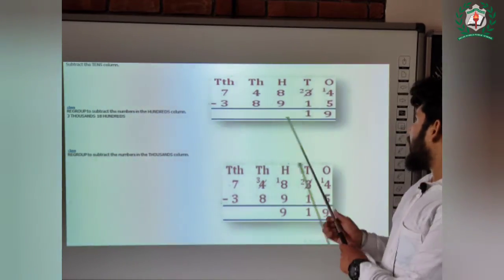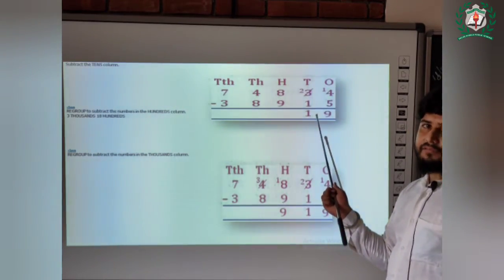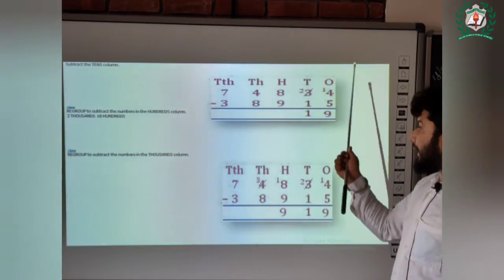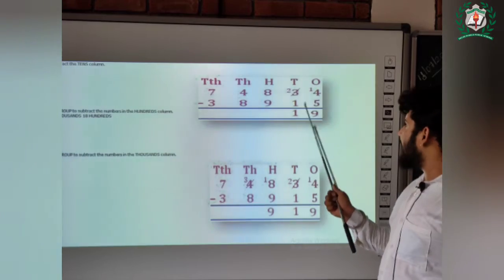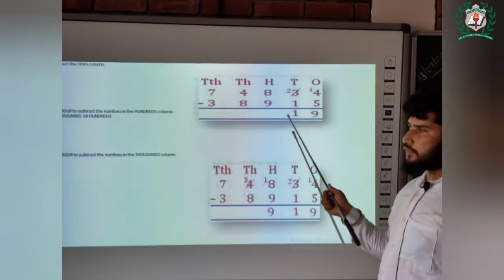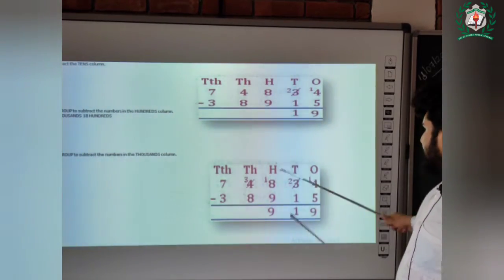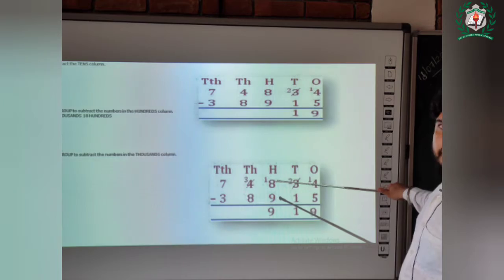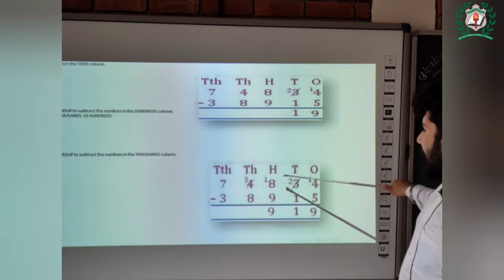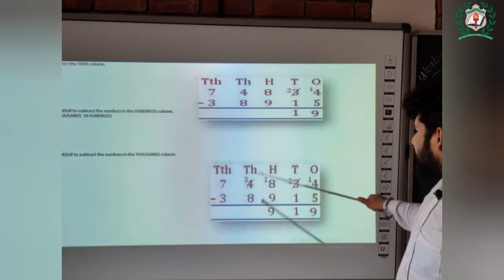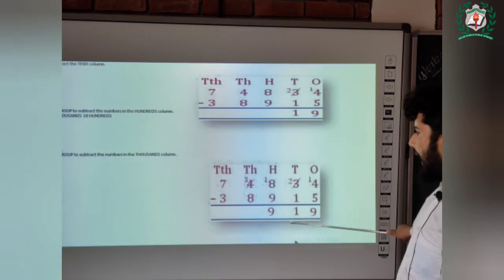Now, ones below ones: four minus five — we can't do that, so we have to take a carry. Fourteen minus five is nine. Now here, two minus one is one. Second step, hundreds: eight minus nine — we have to take a carry. Eighteen minus nine is nine.